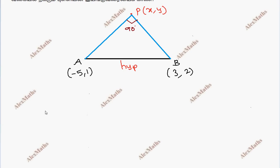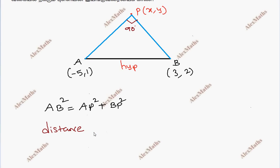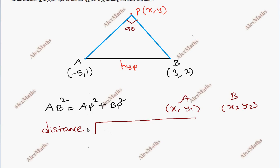Since AB is the hypotenuse, we have: AB² = AP² + BP². Now we use the distance formula. The distance formula for two points (x1, y1) and (x2, y2) is: distance = √[(x2 − x1)² + (y2 − y1)²]. Now we have three distances to compute.